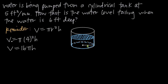Since we have an equation that relates water volume to water height, and those are the two things changing with respect to time, we can now differentiate this equation with respect to time. That requires implicit differentiation, because we're differentiating the variables in this equation with respect to a third variable — time — that doesn't appear in this equation.